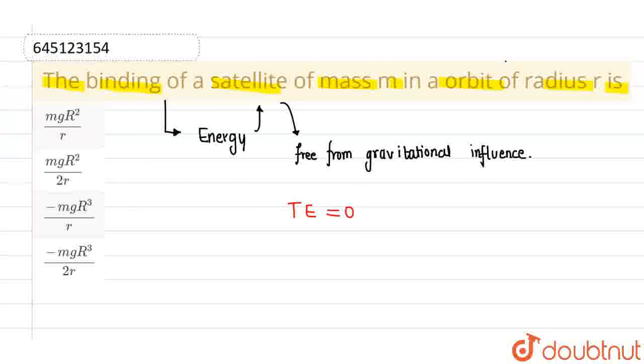First, we know that for a satellite orbiting around the planet, the total energy is given by -GMm/2r. This is the total energy.